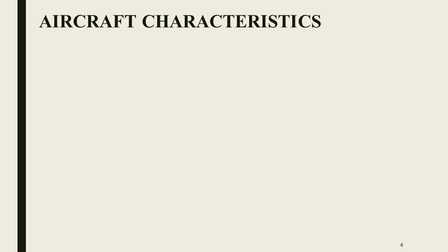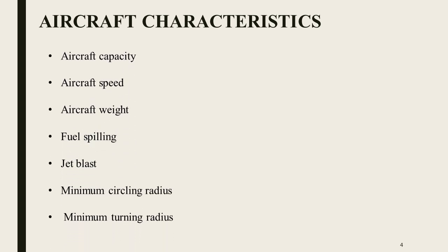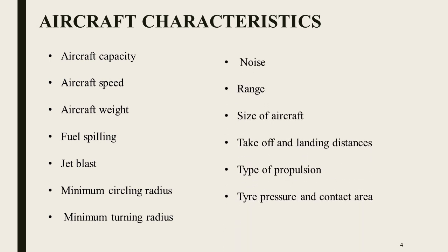Today we will discuss various aircraft characteristics and their influence on Airport Planning. Various aircraft characteristics include aircraft capacity, aircraft speed, aircraft weight, fuel spilling, jet blast, minimum circling radius, minimum turning radius, noise, range, size, takeoff and landing distance, type of propulsion, tire pressure and contact area.